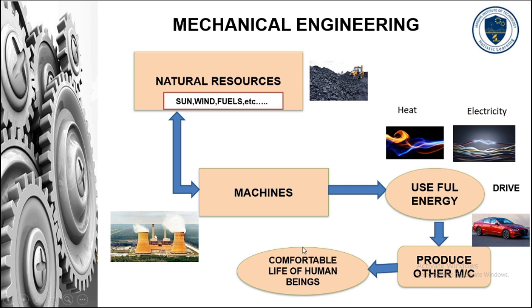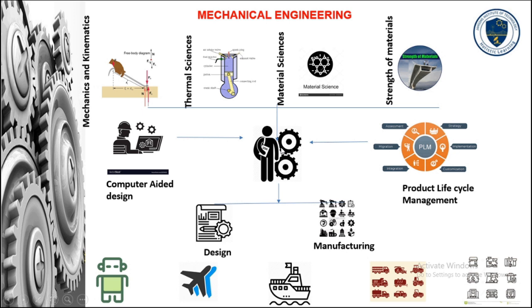Mechanical Engineering means dealing with machines — that is, designing, analyzing, and manufacturing of machines. In this slide, we discuss the program outcomes for Mechanical Engineering students. In this course, the student gains fundamental knowledge from core courses like Mechanics and Kinematics, Thermal Sciences, Material Sciences, and Strength of Materials. Along with core courses, the student also gains knowledge from computer-oriented design and product lifecycle management for the design and manufacturing of various systems like robotics, aeronautical components, marine components, automotive components, and other industrial machines.